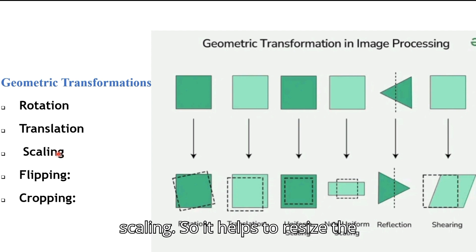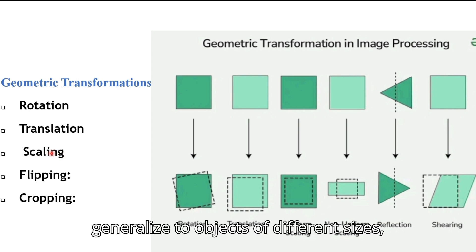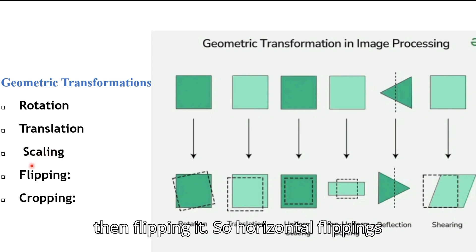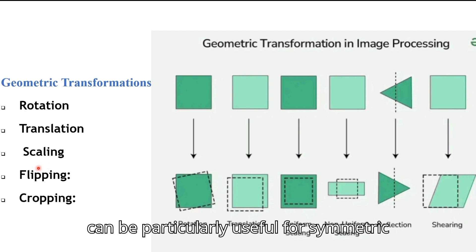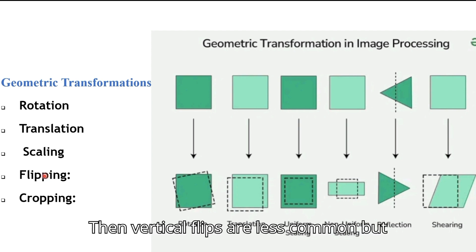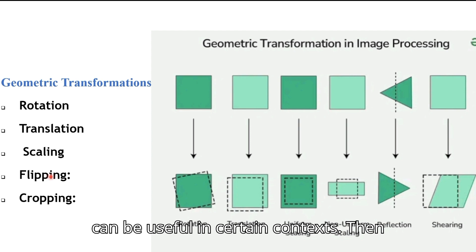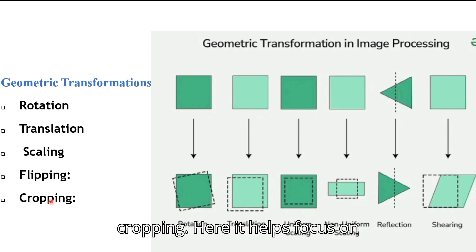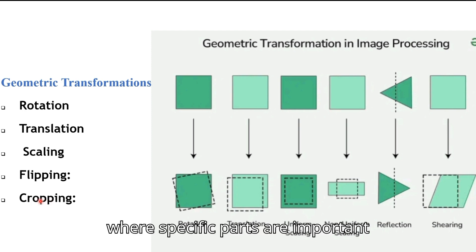Scaling helps to resize the images, helping the model generalize to objects of different sizes. Horizontal flipping can be particularly useful for symmetric objects like faces or vehicles, while vertical flips are less common but can be useful in certain contexts. Cropping helps focus on various regions of interest where specific parts are important, such as in medical image processing.